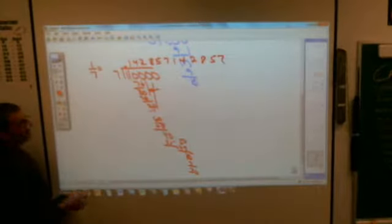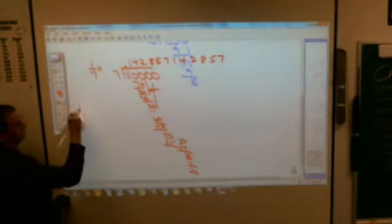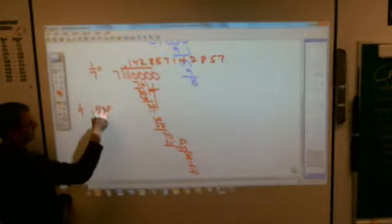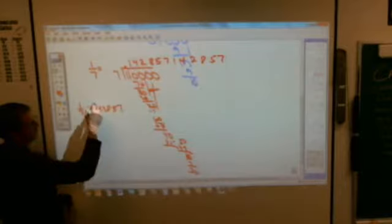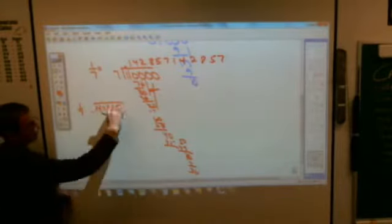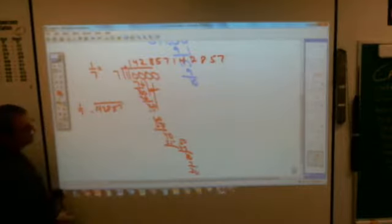So when you show that as a repeater, you have to put the line over every digit that repeats. So the line would have to go over that whole thing. That tells you that whole group of numbers repeats over and over and over and over again. Isn't that exciting?